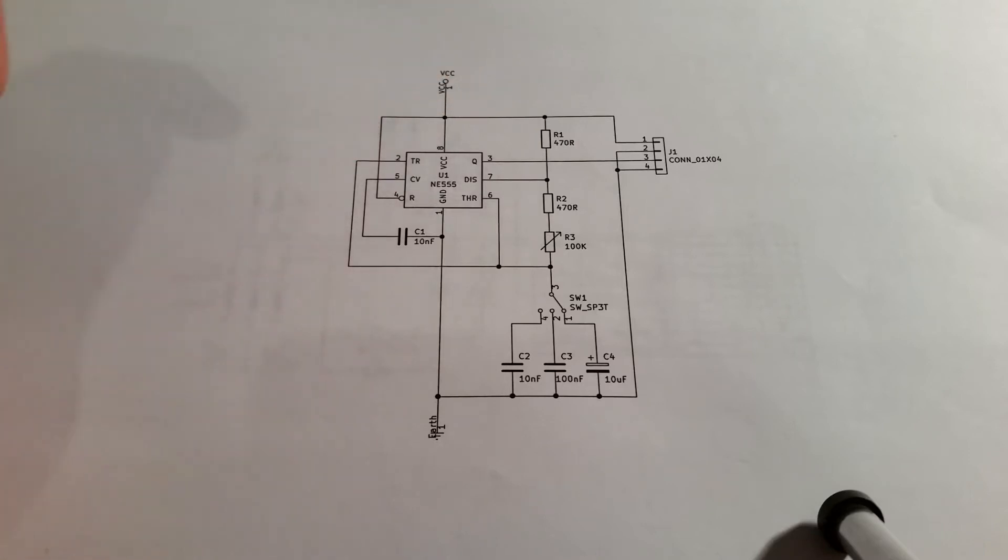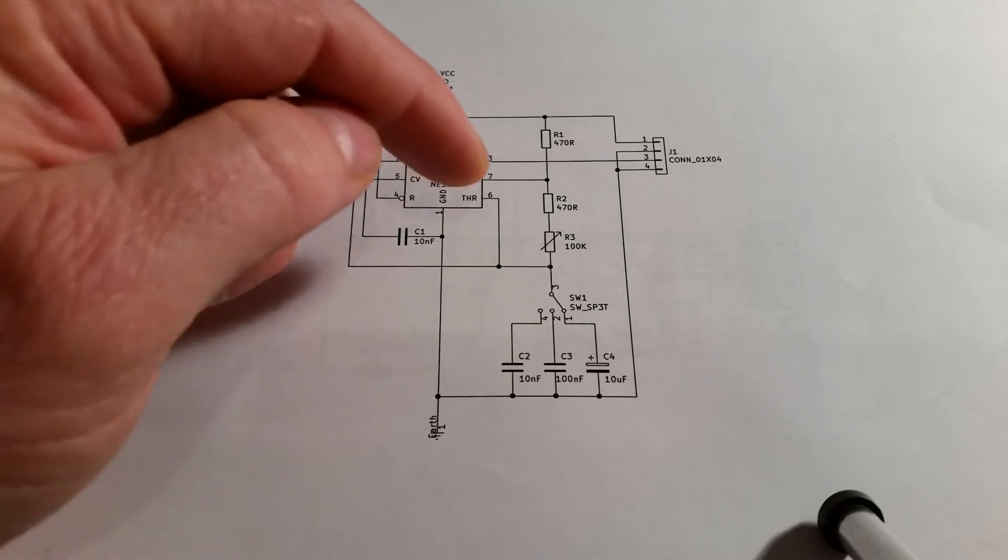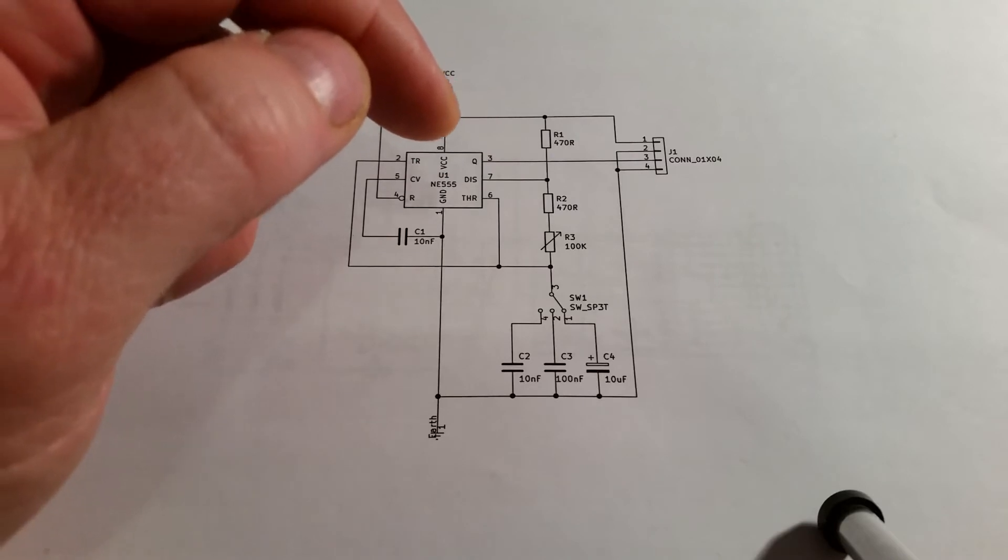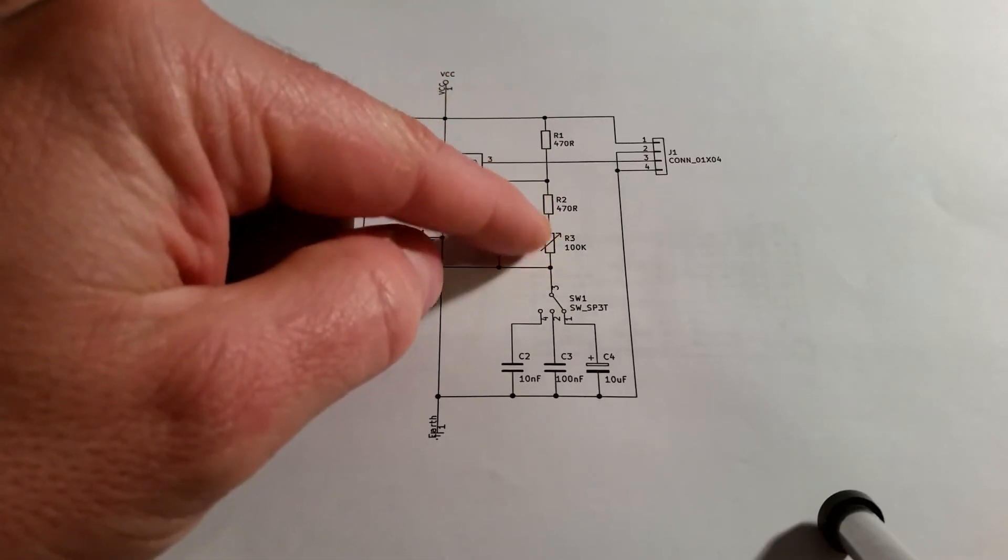So I want to try and keep the mark space ratio at a reasonably similar sort of time to make a nice uniform square wave. And then the second resistor, which I've got as a variable resistor and a standard resistor as well.